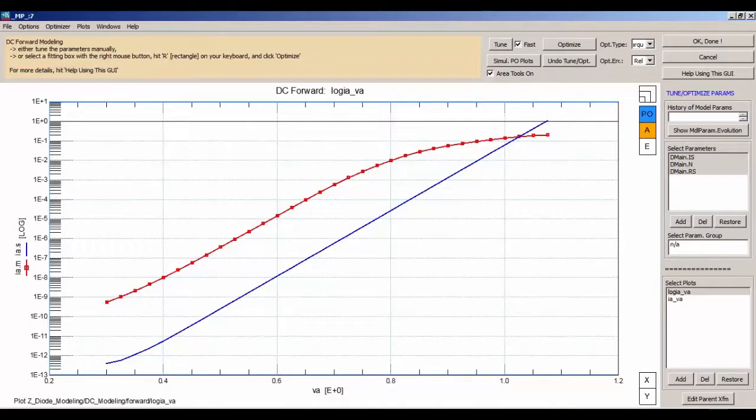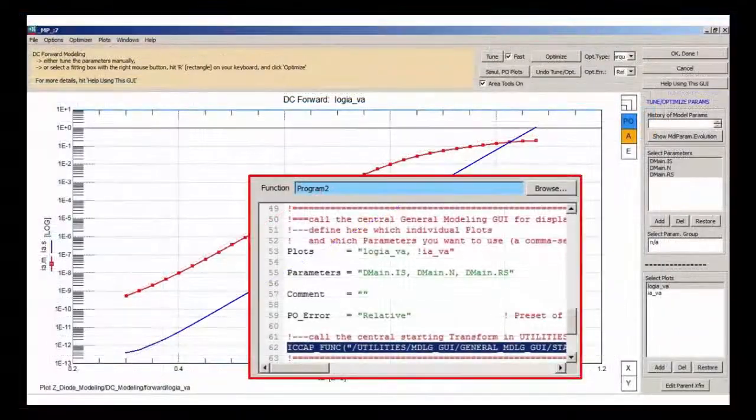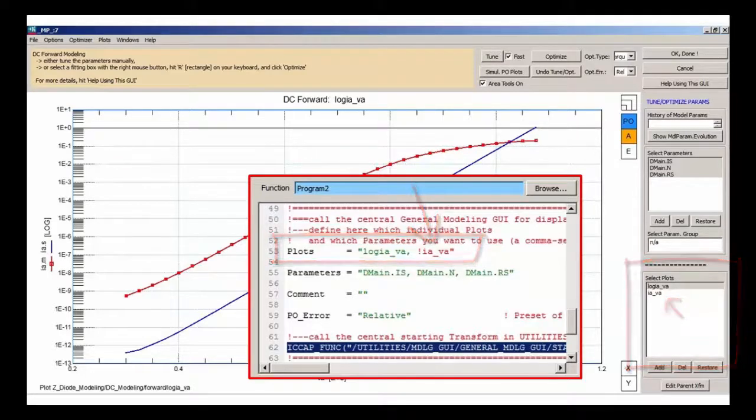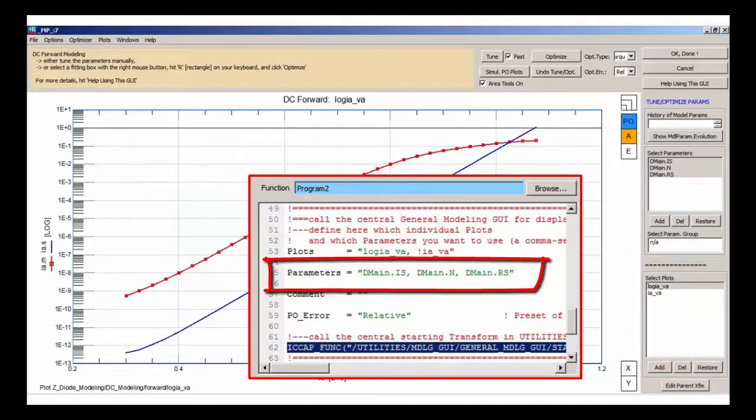In red, we have the measured data and in blue, the simulated data from the model. Since no fitting has occurred yet, we see significant gap between the two. The plot log curve I over V A is immediately shown and the linear plot marked by a comment sign in variable plots is available in the GUI for being selected upon request. The model parameters IS, N and RS are displayed and ready for use as defined by variable parameters.